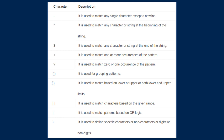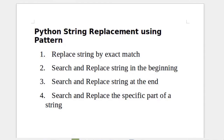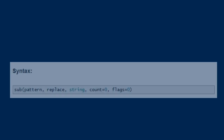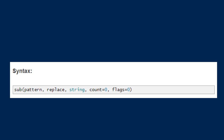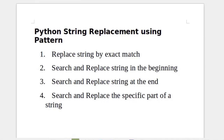These are the most commonly used characters for patterns. These are some common methods to replace a string in Python by using patterns: we can replace a string by exact match, search and replace string in the beginning, at the end, or search and replace the specific part of a string. To replace a string we use the sub method of the re module. The pattern, replace, and string are mandatory arguments. If the pattern is matched with any part of the string, it will replace that part by the value of the replace argument. The other two arguments are optional.